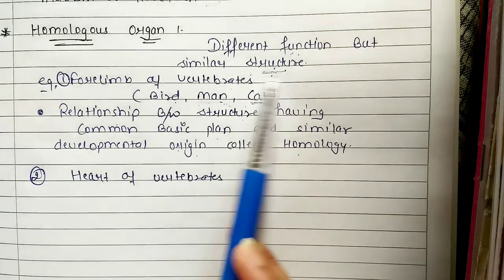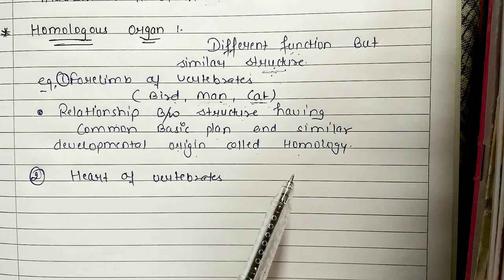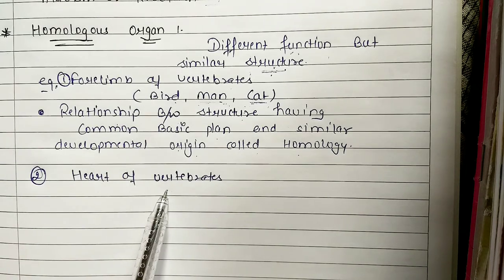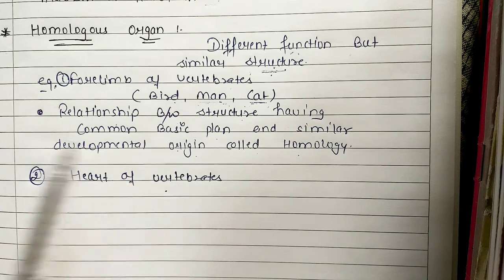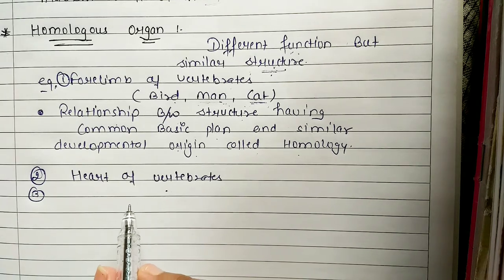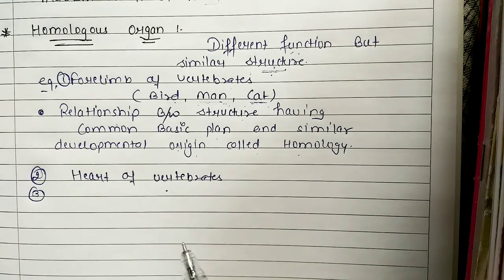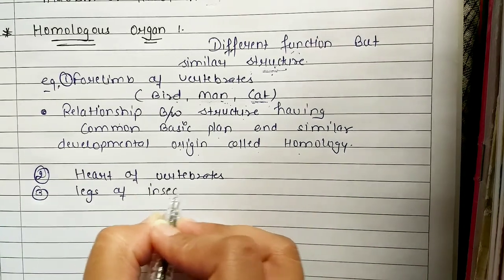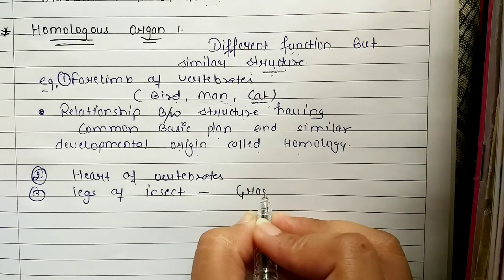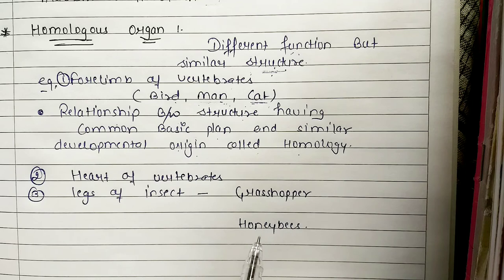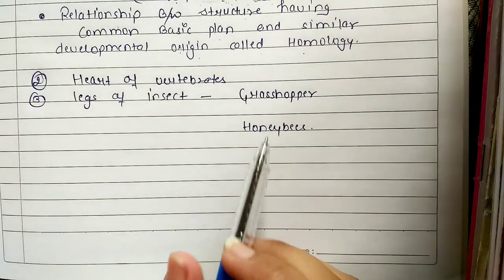Mostly we have to depend on the structure — the structure which is similar, the basic plan, or common origin. Another example: two insects — if we talk about a honeybee and another insect — their two legs have a very similar structure and common basic plan, but their functions are different.